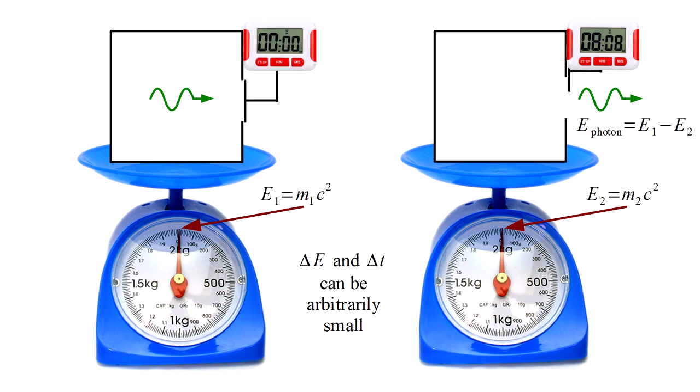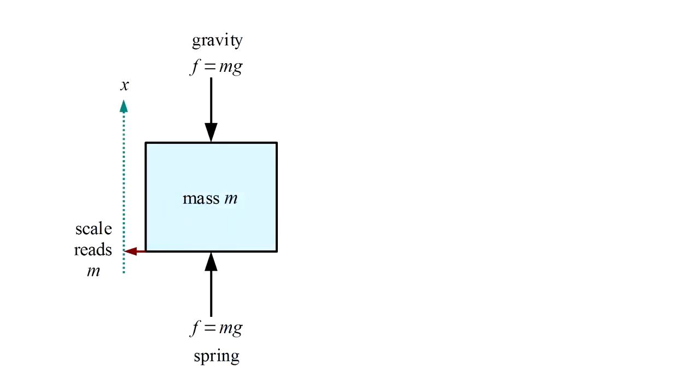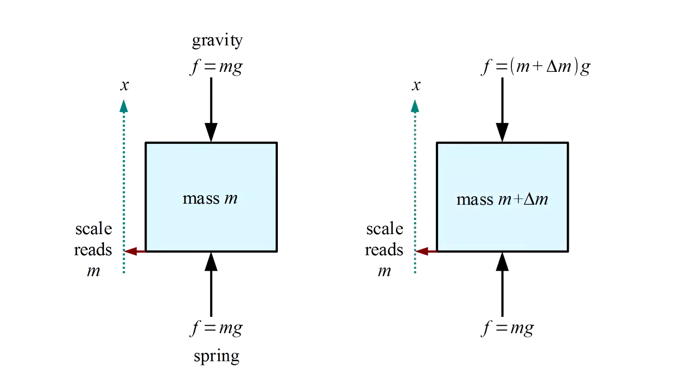This was a difficult challenge, but Bohr eventually found a convincing response. A subtle issue arises in the process of weighing the box. If a scale pointer indicates a mass m, we assume this means that the downward force of gravity acting on the mass, m times the gravitational acceleration g, is exactly balanced by the upward force of the scale's spring. But what if I claim that, no, the box mass is actually a little more, m plus delta m.